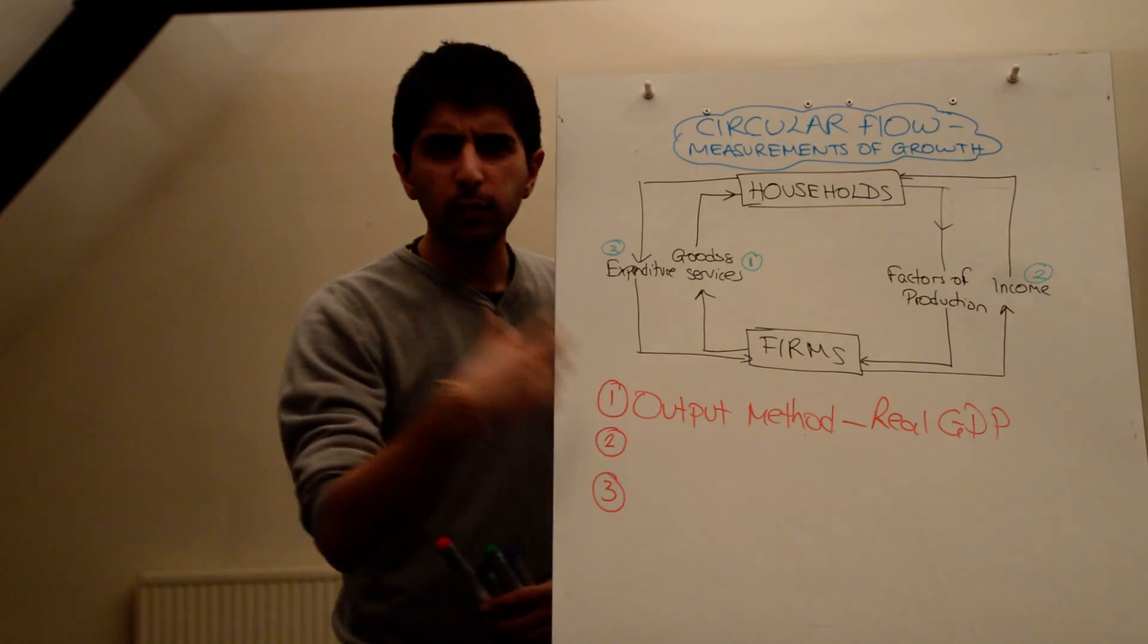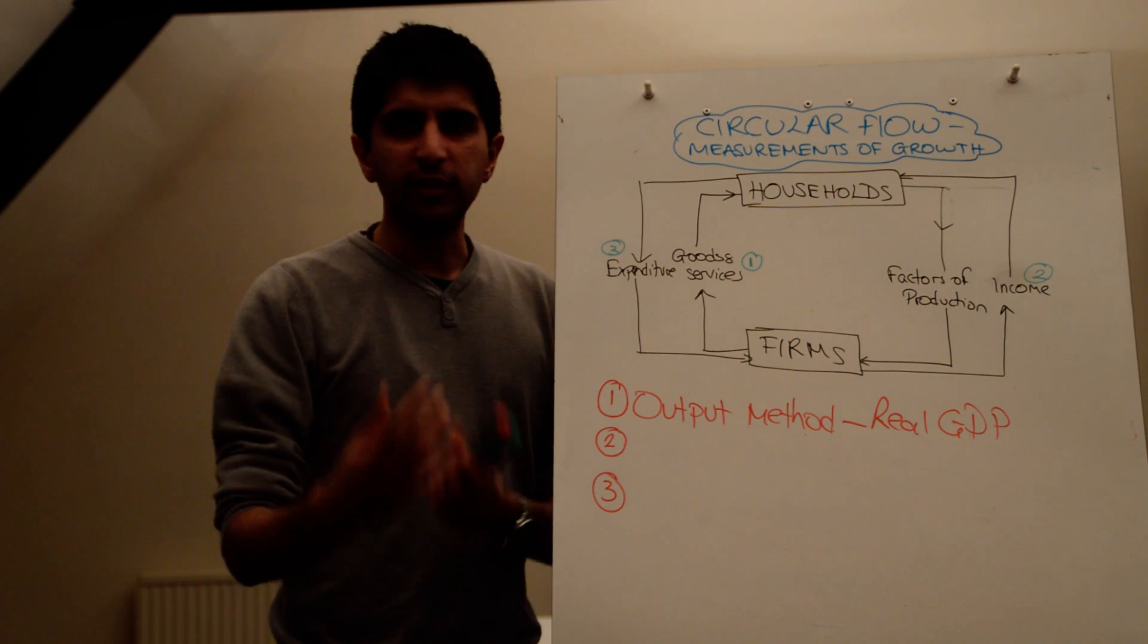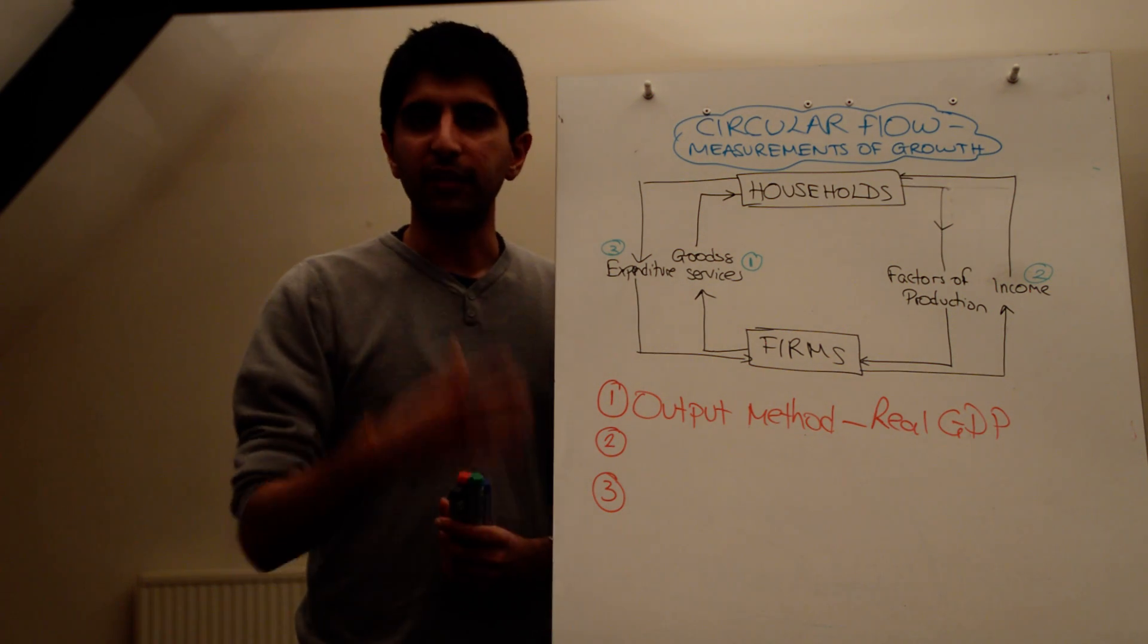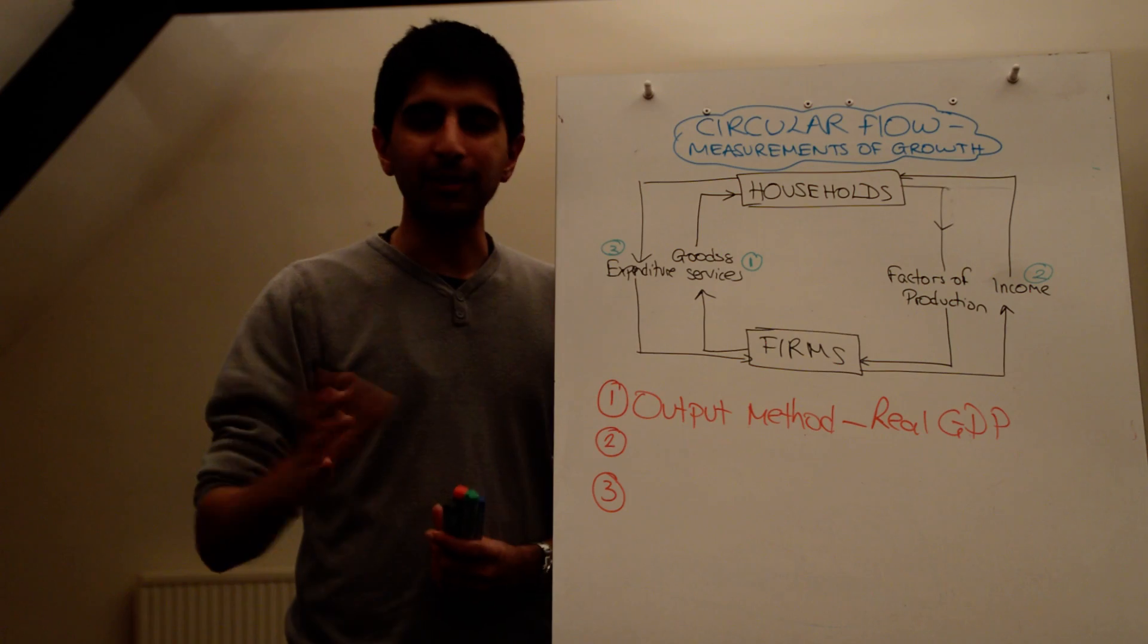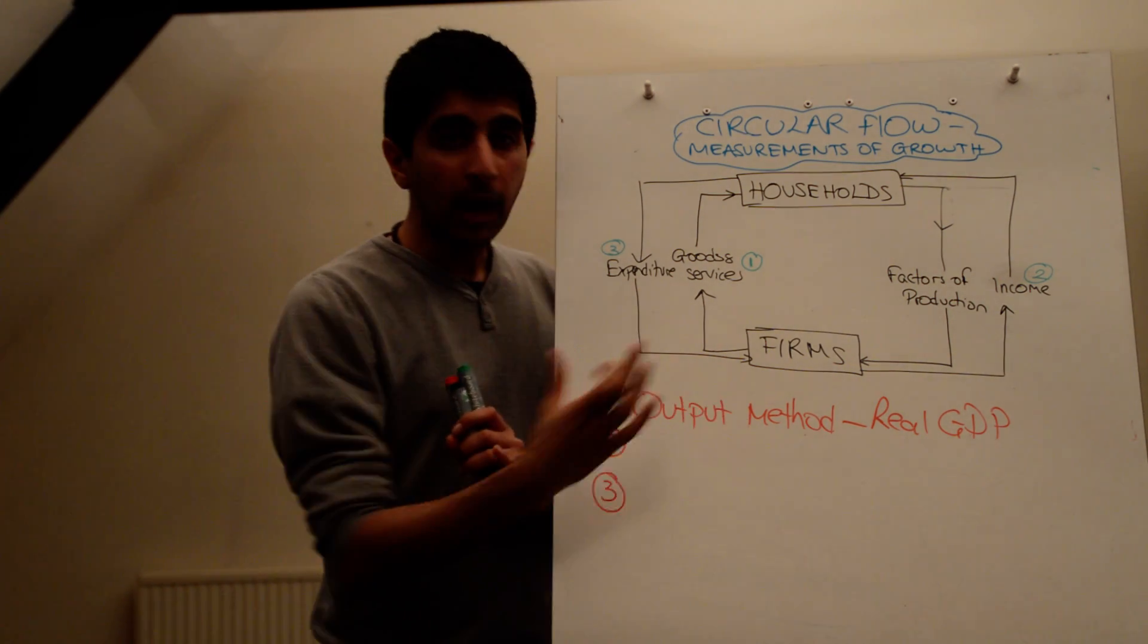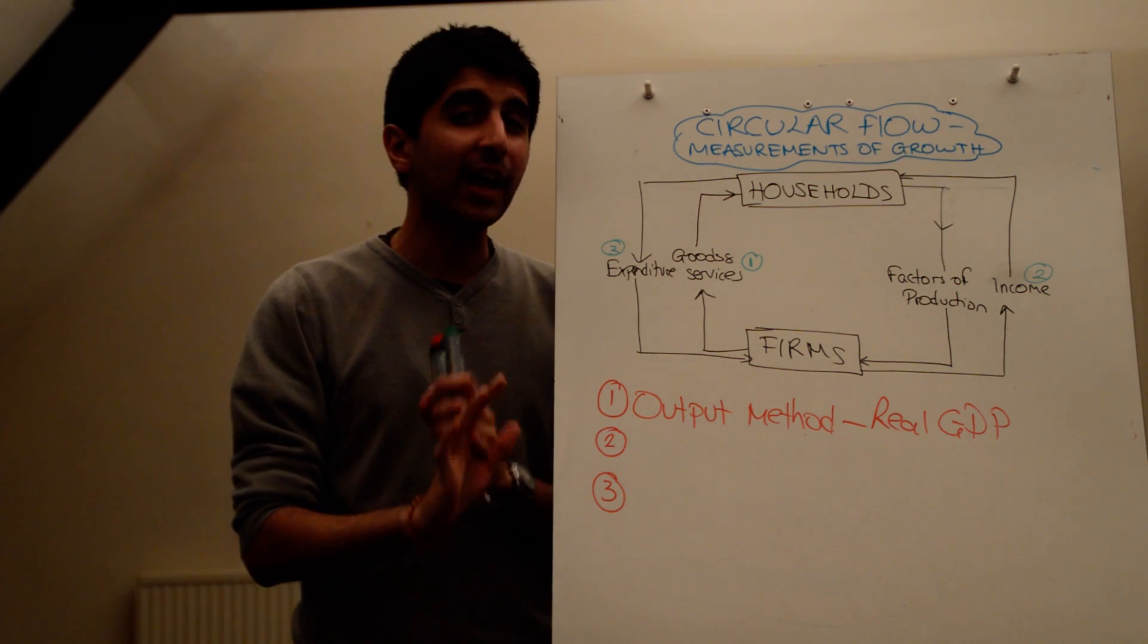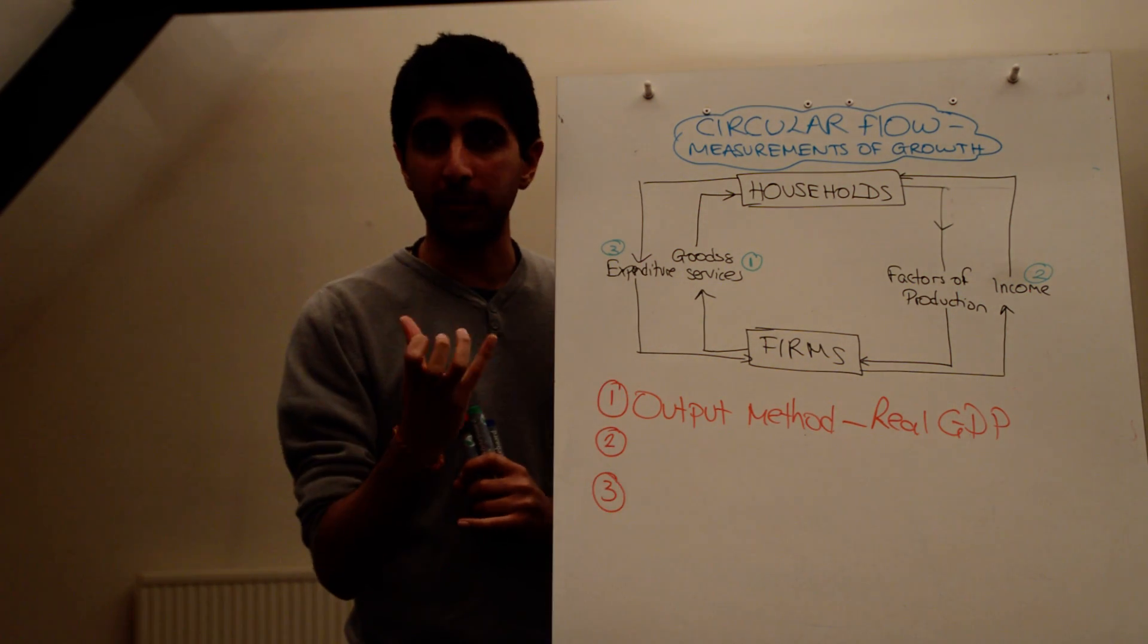There are a few things we need to understand here with this method, though. It's not just as simple as going to firms, working out what they're producing. The value of what they actually go on and sell is then added up. It's not quite as simple as that. What needs to be ensured is done with the output method is that the value added is calculated. Not just the value. The value added, specifically.